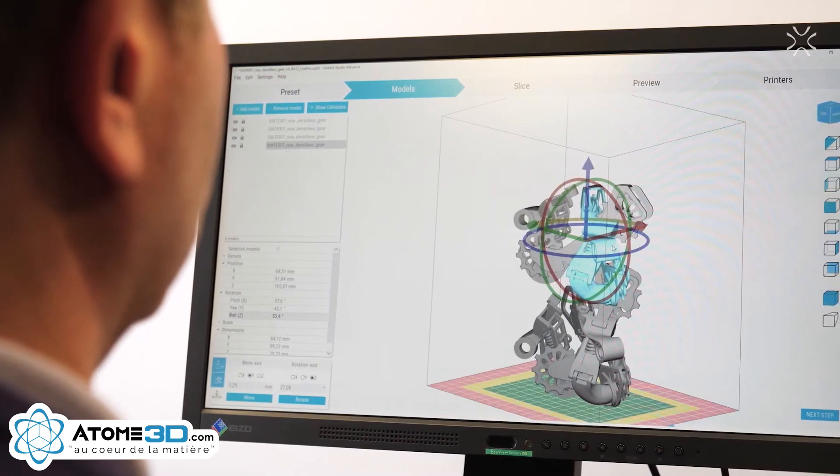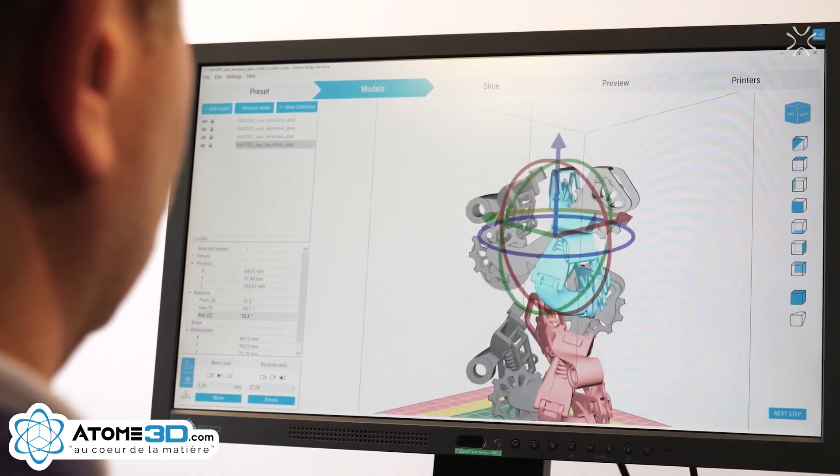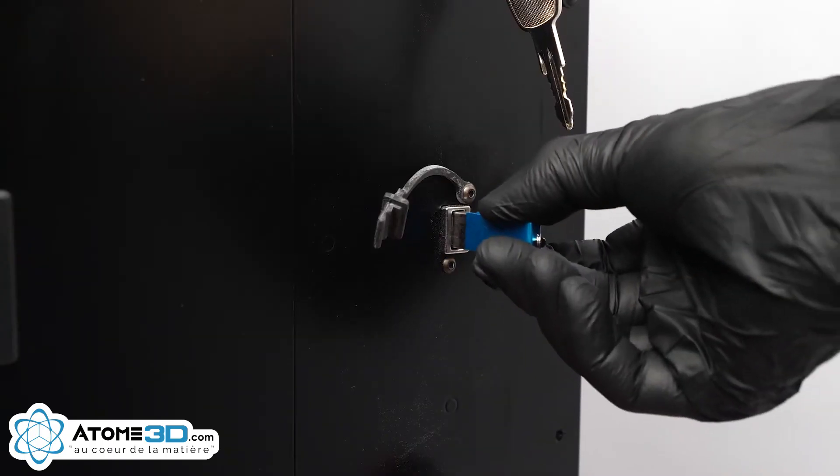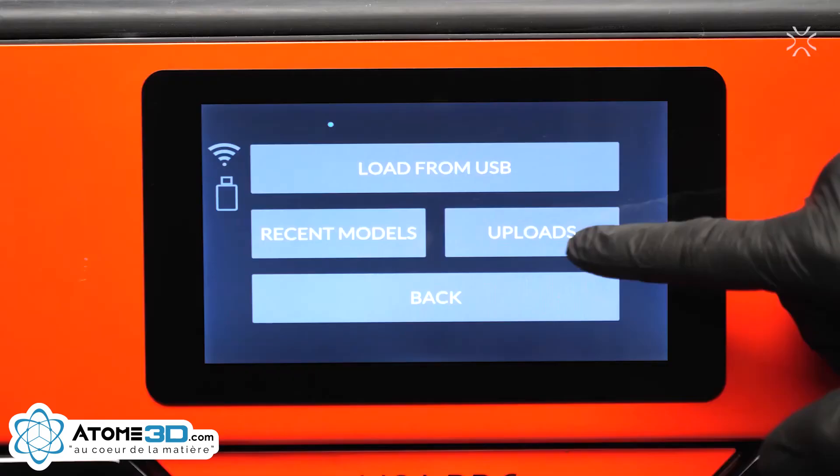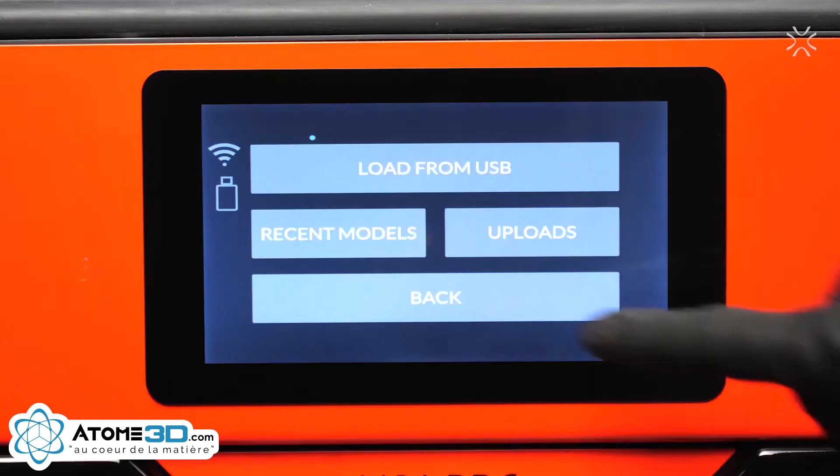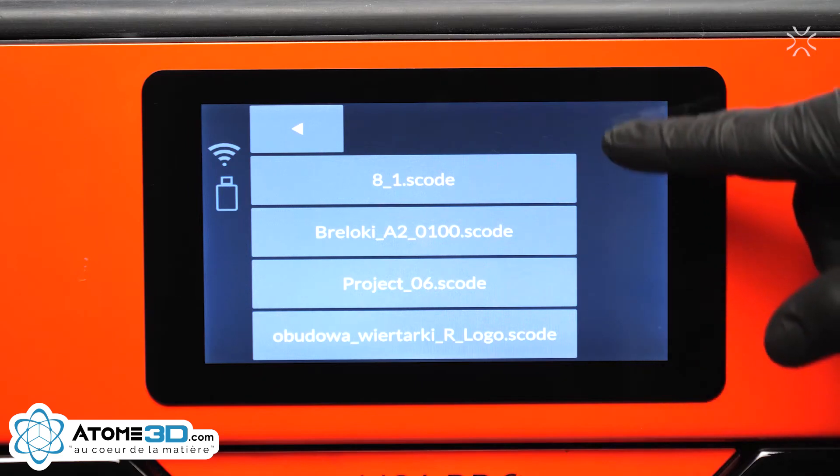It is time to upload your printing file. You can do this in three ways: by inserting a USB flash card, via Wi-Fi, or by choosing one of the files recently saved on the printer.